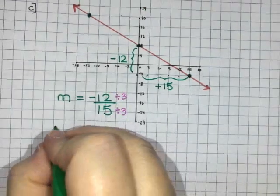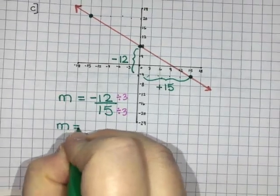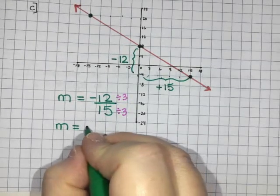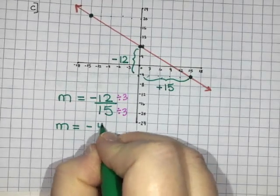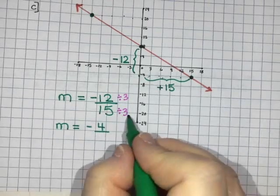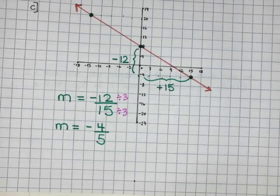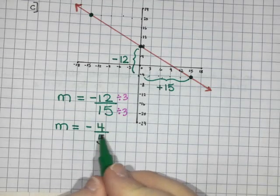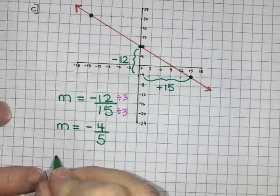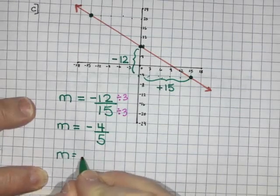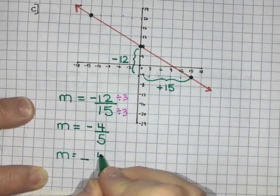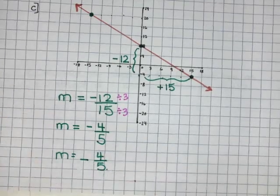So that means my slope would be negative 12 divided by 3 so that's negative 4 and then 15 divided by 3 is 5. So negative 4 divided by 5. Now you can write it as negative 4 like the whole numerator is negative or you could write it as just the whole fraction being negative and then 4 over 5.